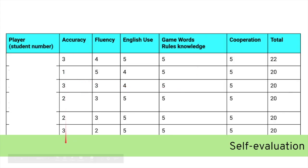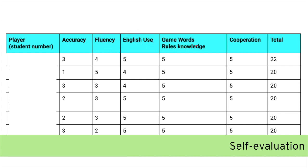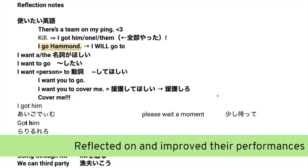Following that, they complete a self-evaluation using the same criteria I use when I assess their first gameplay: how accurate were they, how fluent, how much English were they using, how well did they understand game words and rules, how well did they cooperate, and their total score. During the reflection stage they also made extra notes at the bottom — reflecting on how to improve their performance, with specific English phrases they'd like to use such as 'there's a team on my ping,' 'cover me,' and similar expressions.